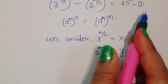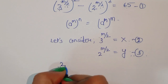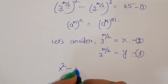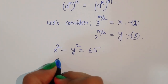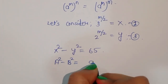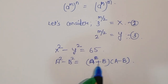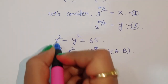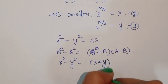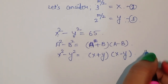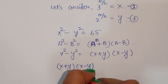Now by substituting equations 2 and 3 into equation 1, we get x squared minus y squared equals 65. We know the formula: a squared minus b squared equals (a plus b)(a minus b). Using this formula here, x squared minus y squared equals (x plus y)(x minus y), so (x plus y)(x minus y) equals 65.